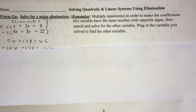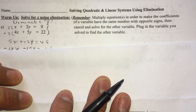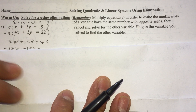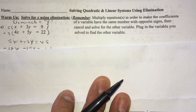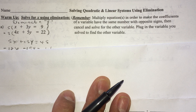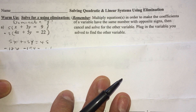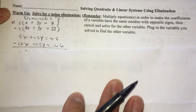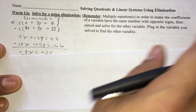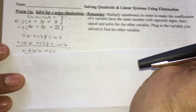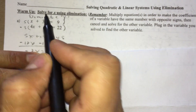Let's begin. The topic today is solving quadratic and linear systems using elimination. Remember, we already did elimination with two lines — we did systems of linear equations. Now we're going to do systems with a quadratic and a linear. But first, let's refresh our minds. Here I have you solve a system of two linear equations — there's no quadratic. I'm asking you to solve for X.